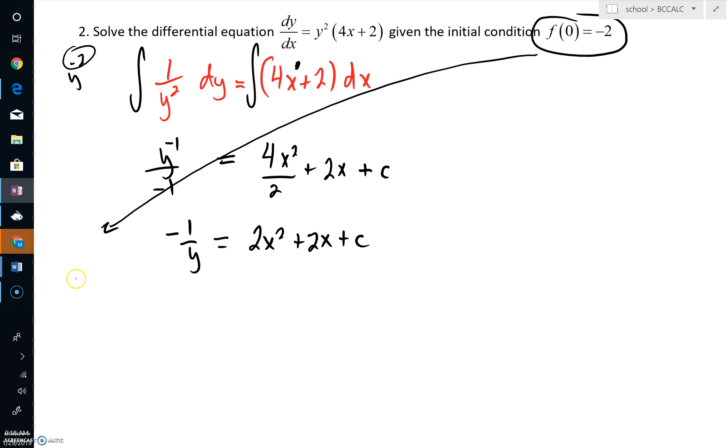But we also have 0, negative 2 as what we really have for an initial condition. So I'm going to let my y value be negative 2, my x value being 0. Well, my goodness, you can see quickly that your c is just going to be positive 1 half.